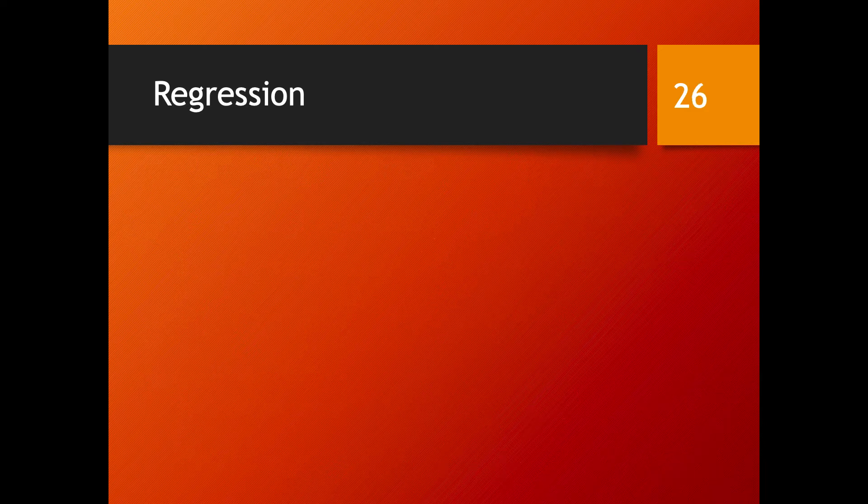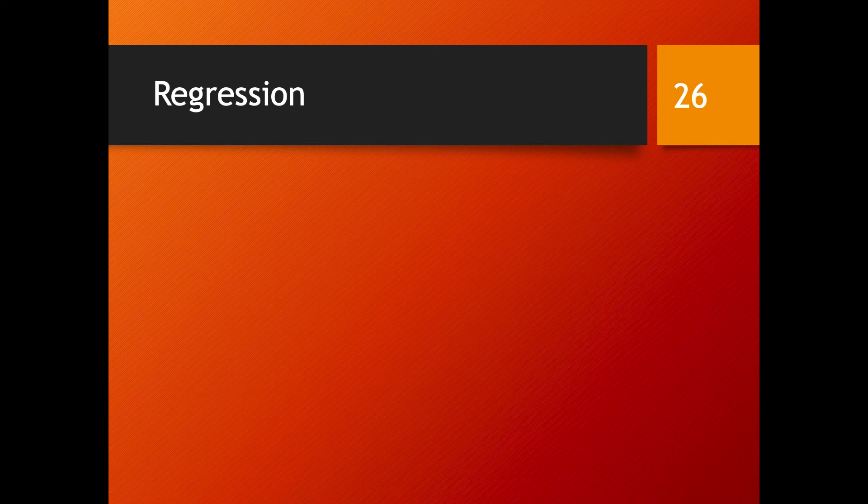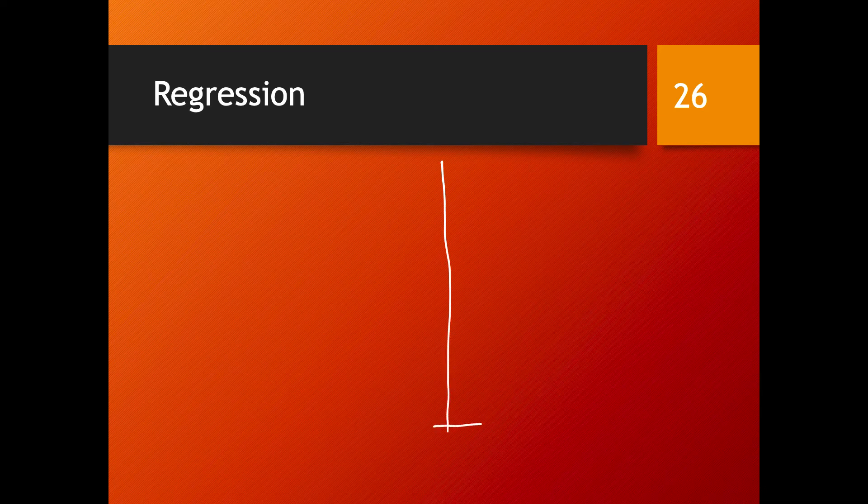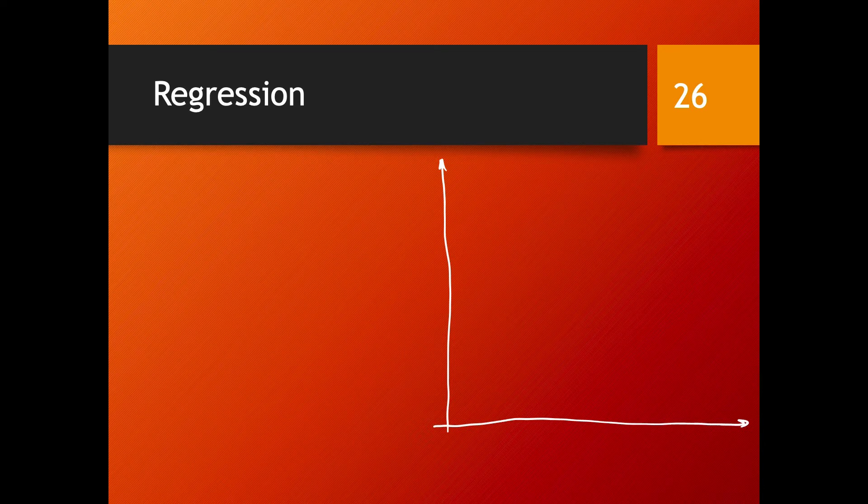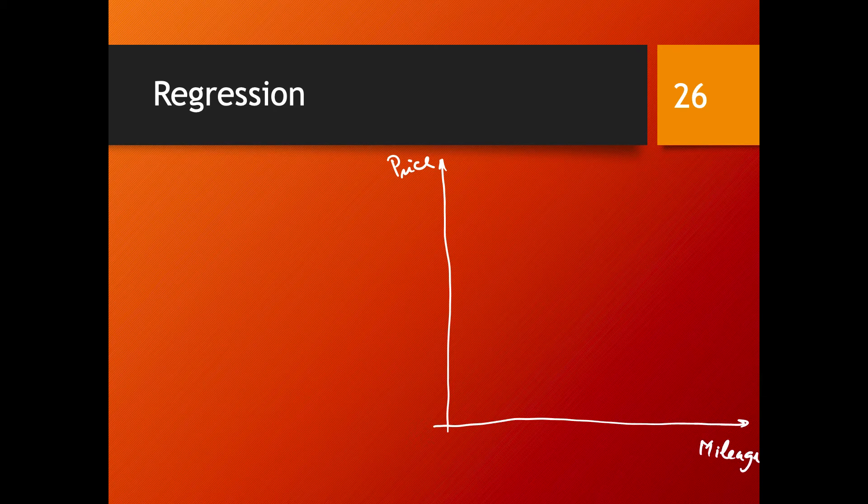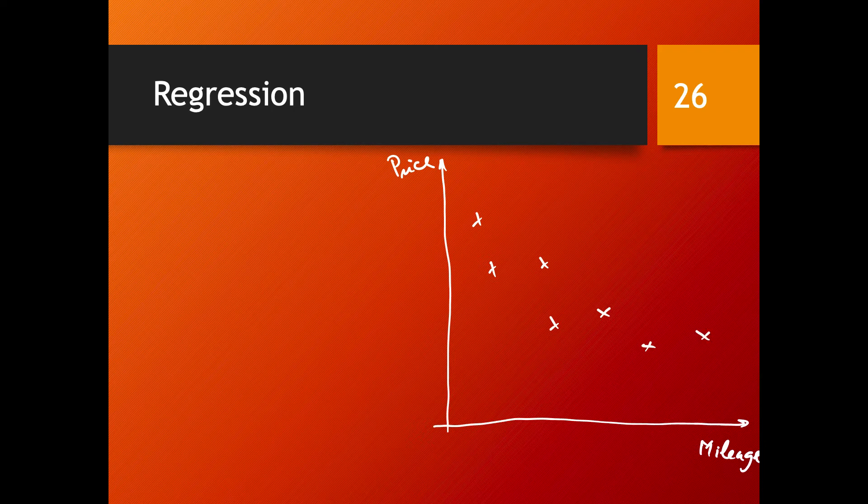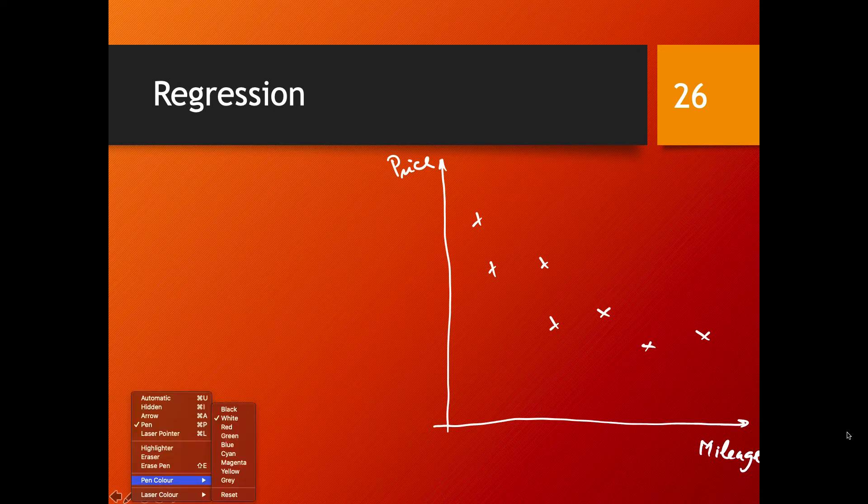Here is an example on how regression could be thought of. If I take one of our early examples where we were thinking about cars and this problem where the price of a car is a function of mileage, we are ignoring all the other features and just consider price against mileage. Let's say that we have a number of data points, something like this.